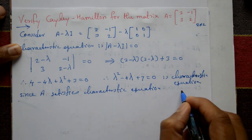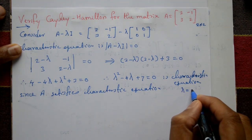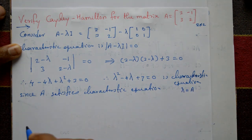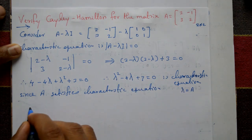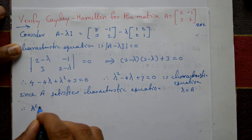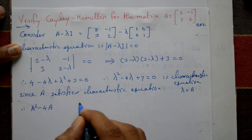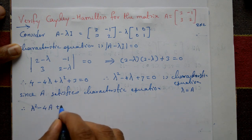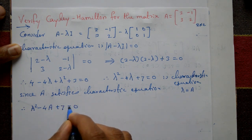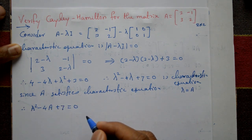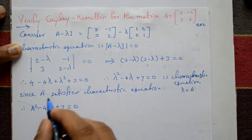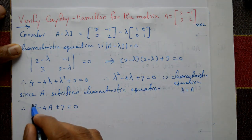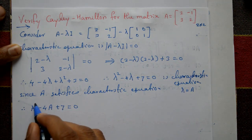To verify, we substitute lambda equal to A. So the equation becomes: A squared minus 4A plus 7I equals 0. We now need to find A squared.